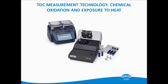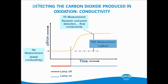Though there are several oxidation methods for measuring TOC, there are fewer options for detecting the produced carbon dioxide. The technologies used in TOC measurement instruments generally fall into two categories: conductivity, or non-dispersive infrared — NDIR.